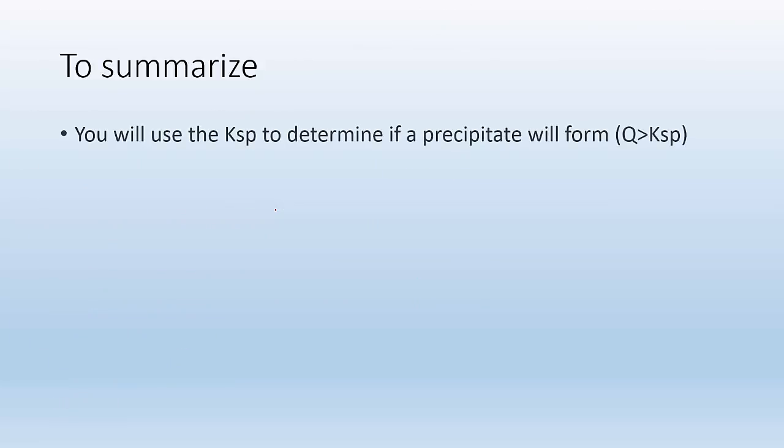So to summarize, you'll use Ksp to determine if precipitate will form by comparing Q versus Ksp. If Q is greater than Ksp, you get a precipitate. So differences in solubility can be used to separate ions in solution. And that is it. Hope you found it helpful. See you in class. Goodbye.